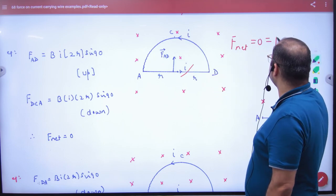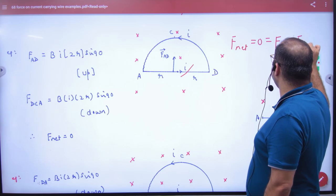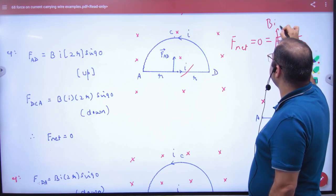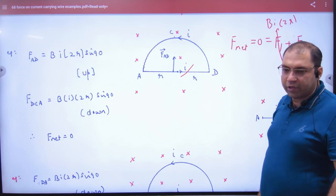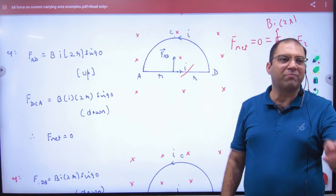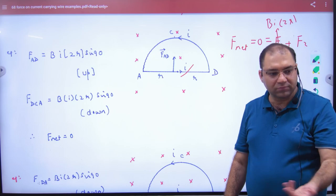What is the net force of this whole loop? The answer is zero. Think: this wire has F1 and the other has F2. F1 is B times I times 2R. So what will F2 be? Minus B times I times 2R, the direction is opposite.